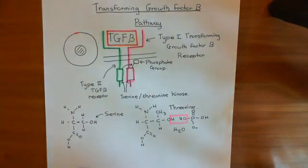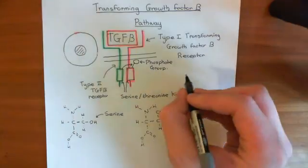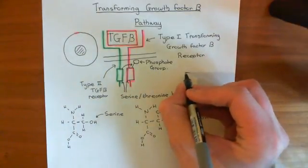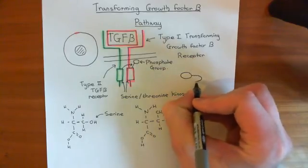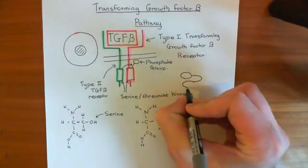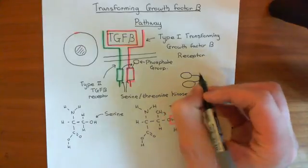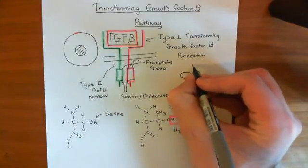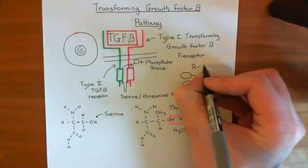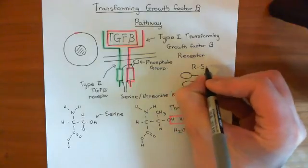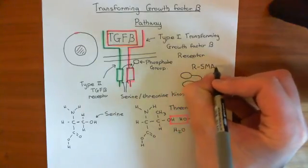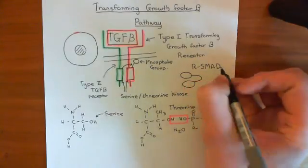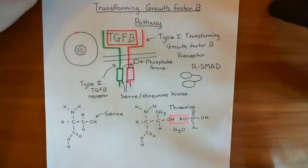Now that the type 1 TGF-beta receptor's serine-threonine kinase is active, it's going to recruit a protein known as SMAD — specifically an R-SMAD, for receptor SMAD — which will interact with the transforming growth factor beta receptor. We'll continue this discussion in the next video.